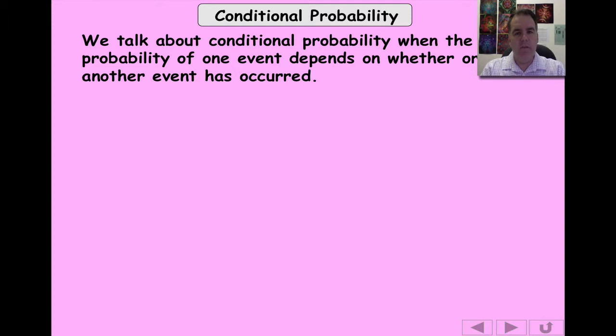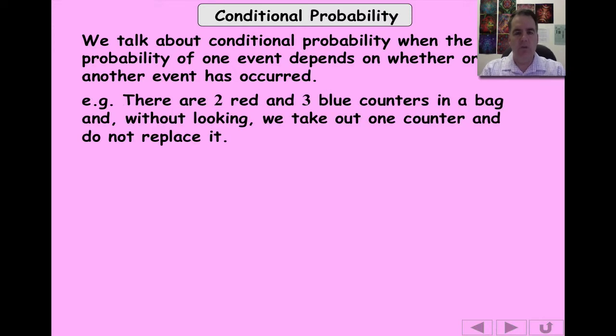When we're talking about conditional probability, we mean where one event depends on whether another event has occurred or not. I'm going to show you a number of different examples of how this can work.